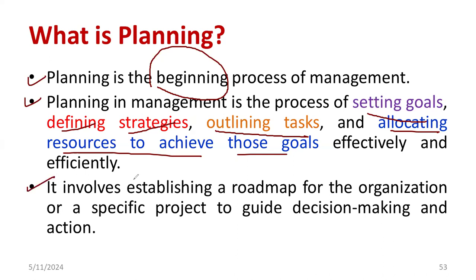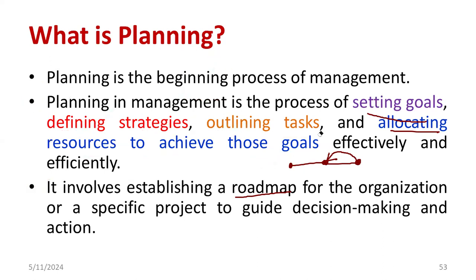Planning also involves creating a roadmap — which task would be completed first, task number one. After that you will go to another task, and like this you will be preparing the roadmap. In case a task is not completed, you come back to that particular task. This is generally called a roadmap. These are the major things which are included in planning.